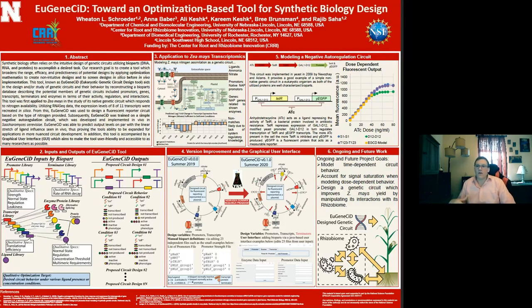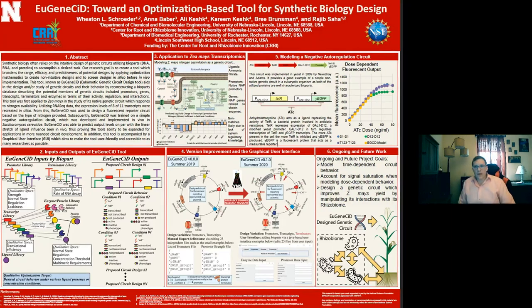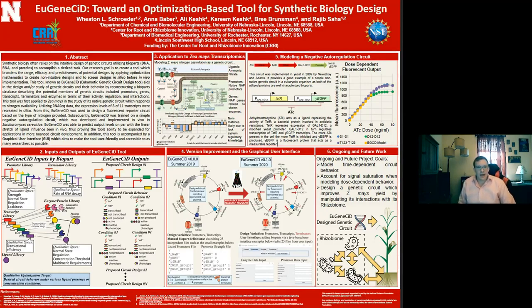How EugeneSid works in broad terms is we have basically five different libraries of bioparts to choose from in order to accomplish a specific design task. These bioparts include promoters, terminators, transcripts, enzymes, and ligands.